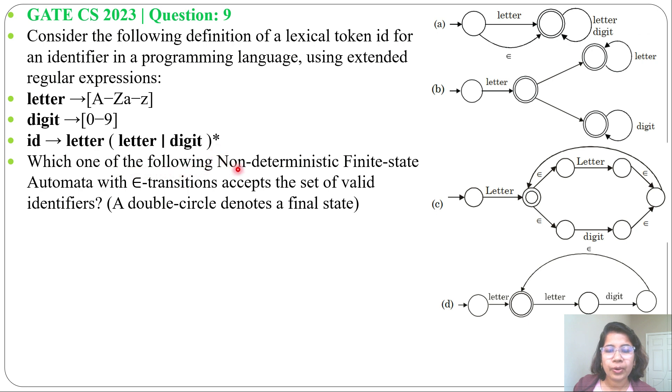Which of the following non-deterministic finite state automata with epsilon transitions accepts the set of valid identifiers? Here double circle means final state. In 4 options, 4 NFAs are given and we need to check which NFA is for identifier.